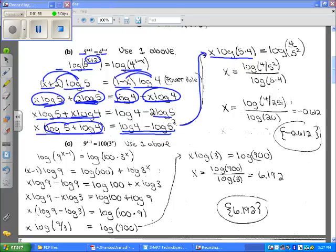So finally what I want to do as a next step is get my x by itself. So I divide both sides by log of 5 times 4 or 20. That's what I got at this point.